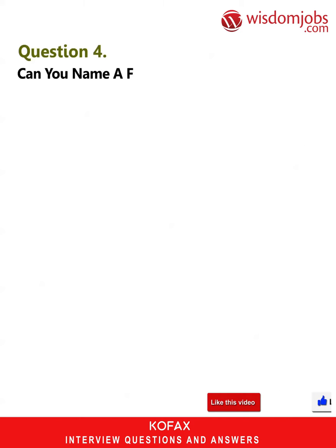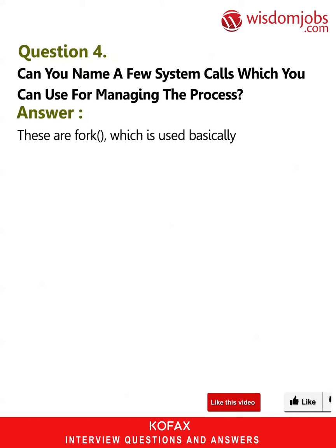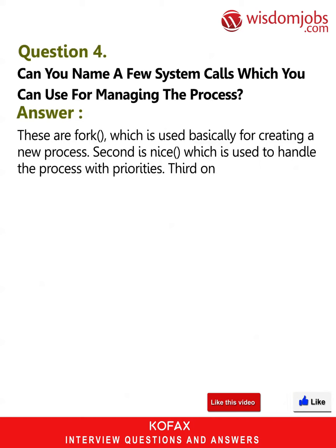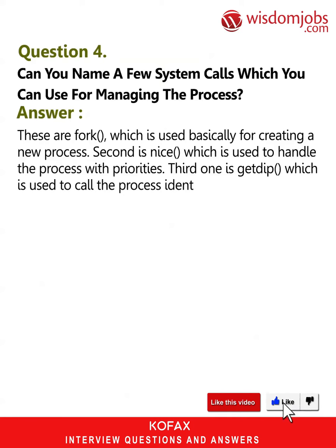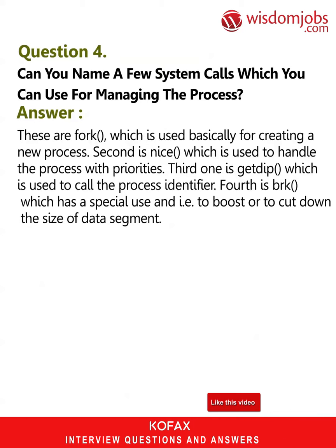Question 4: Can you name a few system calls used for managing a process? These are: fork, which is used for creating a new process; nice, which is used to handle processes with priorities; getpid, which is used to call the process identifier; and BRK, which has a special use to boost or cut down the size of a data segment.